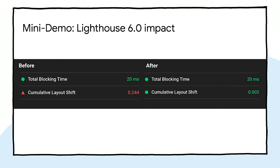Here's the Lighthouse 6.0 impact: we reduced our layout shifts from 0.24 all the way down to about zero — it's in the green. Let's talk about a production example of this on Chloe.